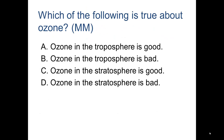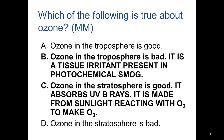Which of the following is true about ozone? If you picked B and C, you're correct. Ozone in the troposphere is bad — it is a tissue irritant present in photochemical smog. Ozone in the stratosphere is good: it absorbs UVB rays and is made from sunlight reacting with O2 to make O3.